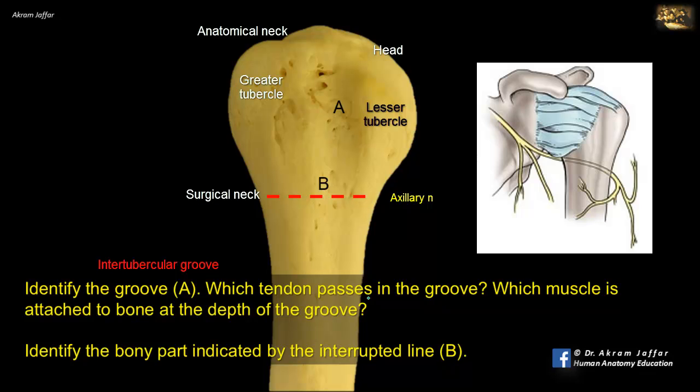Remember that the axillary nerve is accompanied by the posterior circumflex humeral artery in its course around the surgical neck of the humerus.